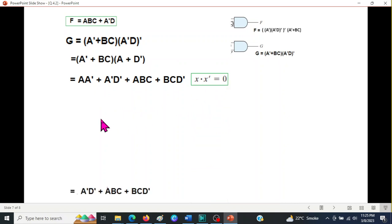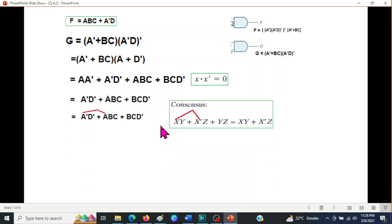So we have this term. And now here I will simply use the consensus theorem. Because you can see there is an A' here and A here. And the third term contains the remaining of A which is BC, and remaining of A' which is D'. So this will become equal to 0. This is our final answer.